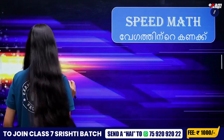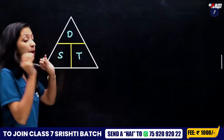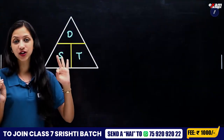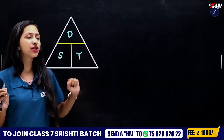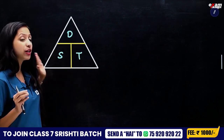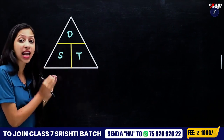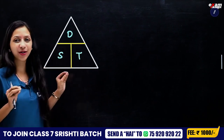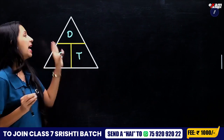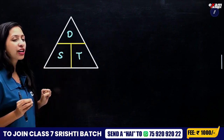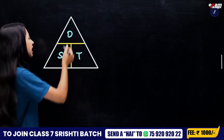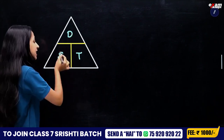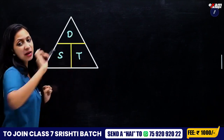Then we will learn the same three equations. We can learn what we are talking about — a triangle trick. If we learn one of the: time, distance, speed — speed and time.